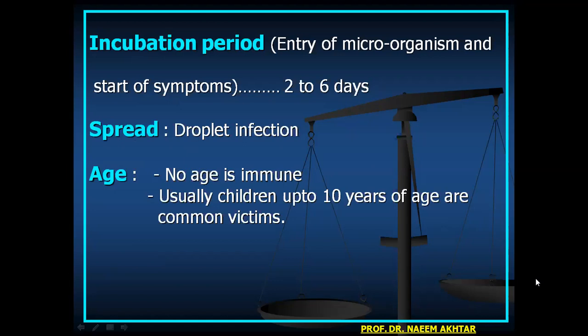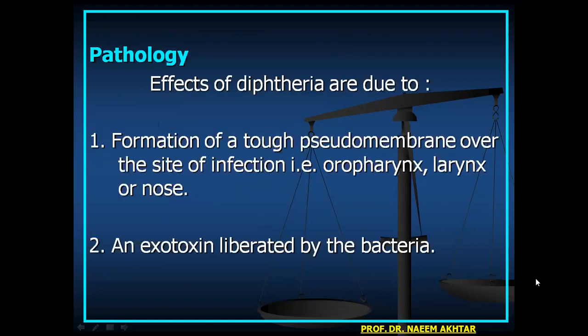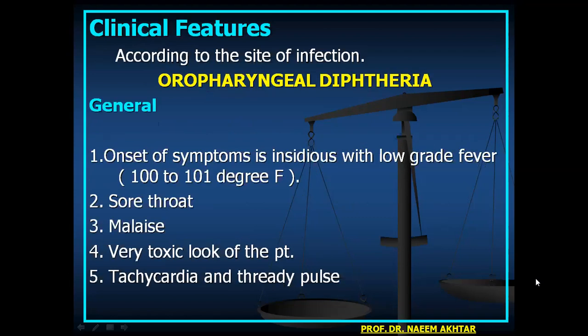No age is immune to diphtheria, though children up to 10 years are common victims. Effects are due to: formation of a tough pseudomembrane over the site of infection, and an exotoxin liberated by the bacteria. Clinical features depend on the site of infection. Oropharyngeal diphtheria: onset is insidious with low-grade fever of 100 to 101 degrees Fahrenheit.